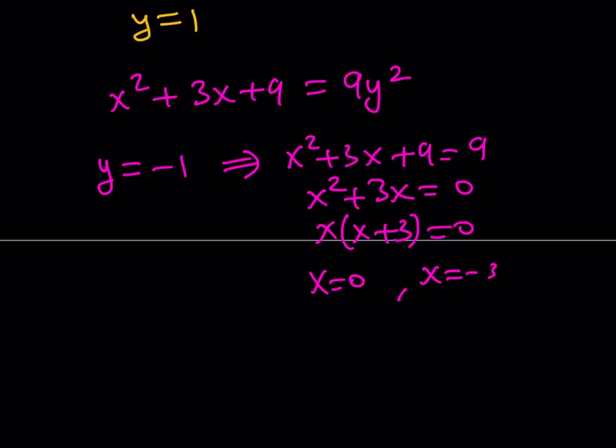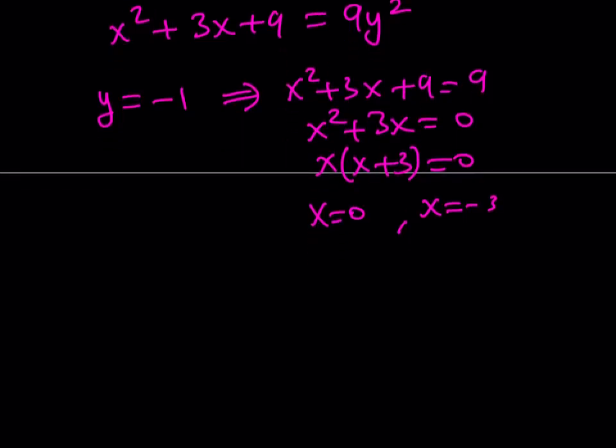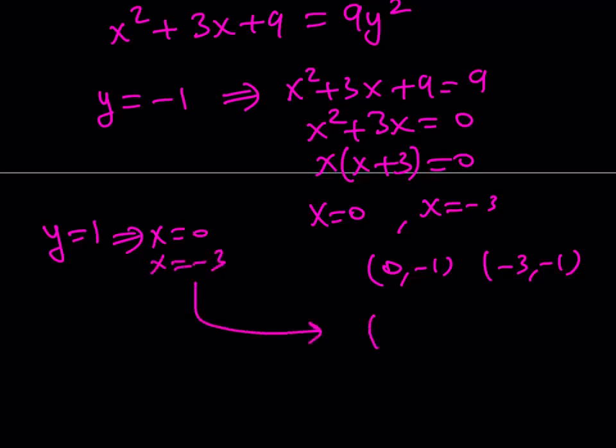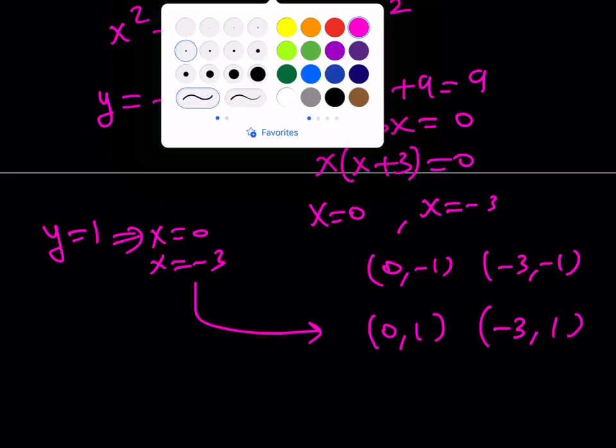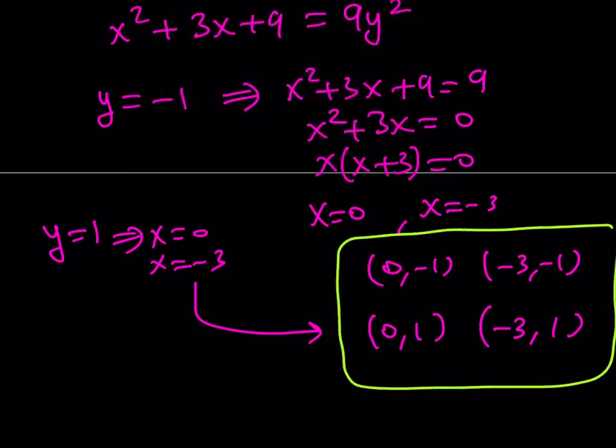So this gives you the ordered pairs, basically, 0, negative 1 and negative 3, negative 1. What happens if y is equal to 1? You get the same thing. Because when you square it, it doesn't really matter. You get x equals 0 and x equals negative 3. And those give you the ordered pairs, 0, 1 and negative 3, 1. So we have basically four solutions and they are all ordered pairs. These are going to be all the solutions.